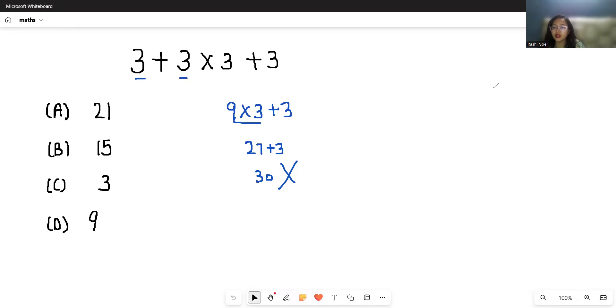We have to follow a rule called BODMAS that helps choose the priority of the sign when multiple signs are given. Since there is addition and multiplication, we have to use this rule that helps you.